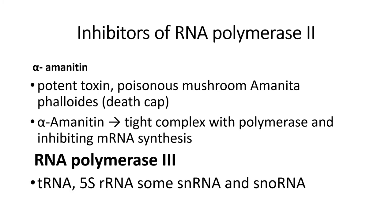RNA polymerase 2 is used for the synthesis of messenger RNA. It is inhibited by alpha-amanitin, a toxin produced by Amanita phalloides, also known as the death cap. It is a poisonous mushroom that produces a potent toxin. Alpha-amanitin forms a tight complex with the polymerase and thus inhibits the synthesis of messenger RNA.